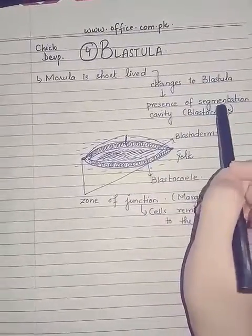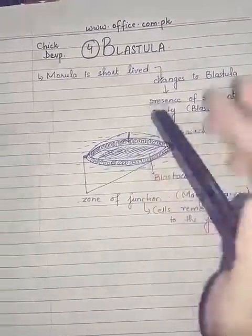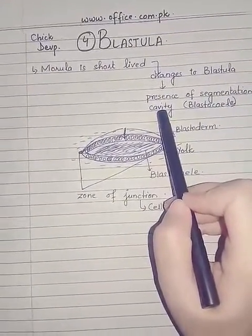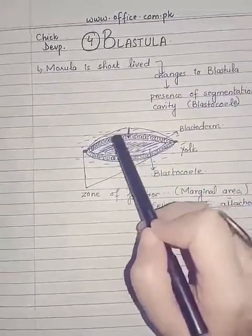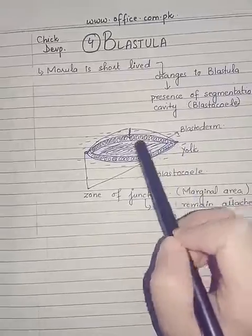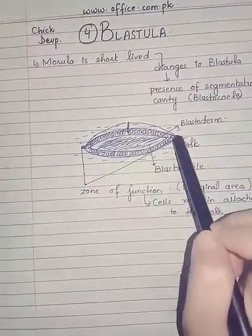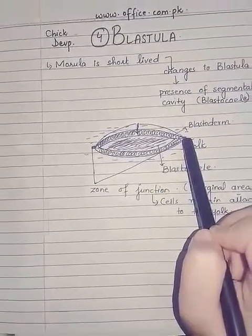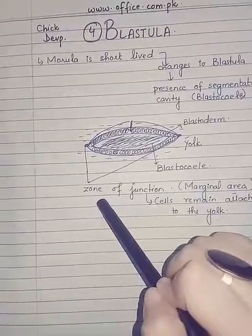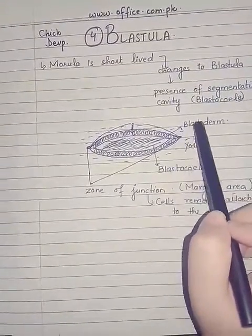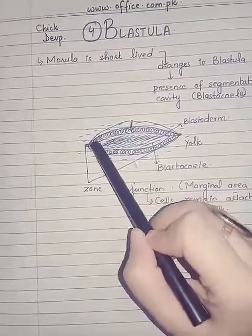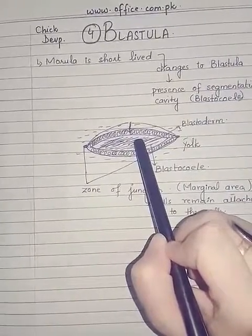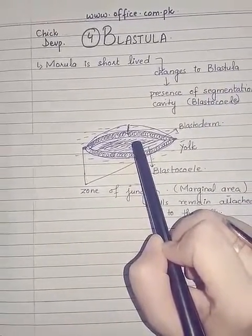The specialty of the blastula phase is the presence of a segmentation cavity, which is present between the two layers of the cells. This cavity is known as blastocoel. At the margins, the cells are still attached to the yolk, and these two points where cells are attached to the yolk are known as zones of junction. This layer of cells is known as blastoderm.